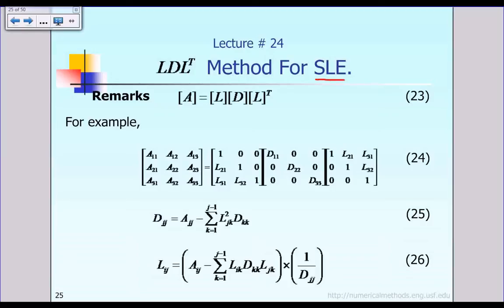If you remember back in lecture number 23, we were trying to solve the system of linear equations represented in matrix notation as AX equal to B. In the previous method, which is the Cholesky method, we assumed that the matrix A is symmetric positive definite.